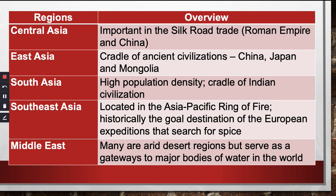Southeast Asia, where we are, is located in the Asia-Pacific Ring of Fire. Historically, it was the gold destination of European expeditions searching for spices. That is why Magellan arrived on the shores of the Philippines — because they were looking for spices to bring back and sell when they returned to Europe and Spain. The Middle East: these are arid desert regions but serve as gateways to major bodies of water in the world — like the Suez Canal, Red Sea, and Mediterranean. Countries there include Saudi Arabia, Yemen, United Arab Emirates, Oman, Kuwait, and others. That's the overview of the regions in Asia.